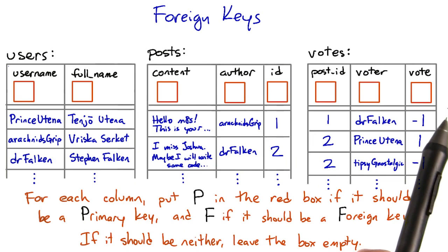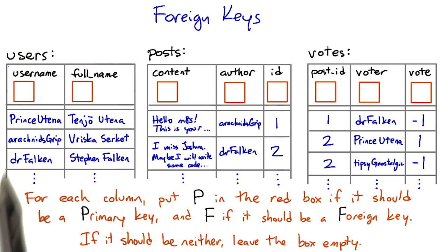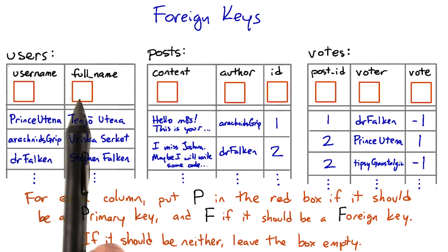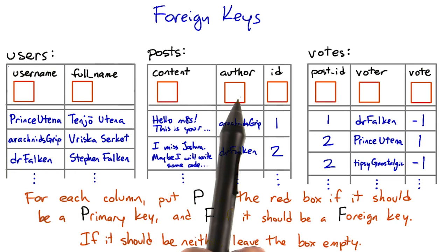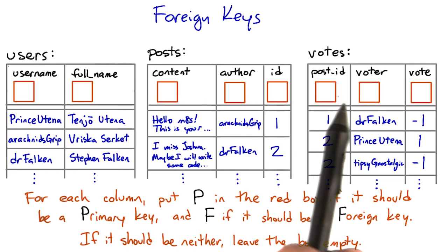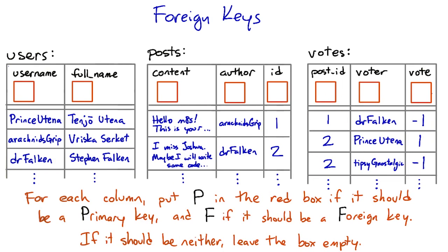So for each one of these columns, if it should be a primary key of that table, put a P in the box. If it should be a foreign key, put an F. If it shouldn't be either one, leave the box empty. Also, although there are no checkboxes for them, think about if any of these tables should have primary keys with more than one column.